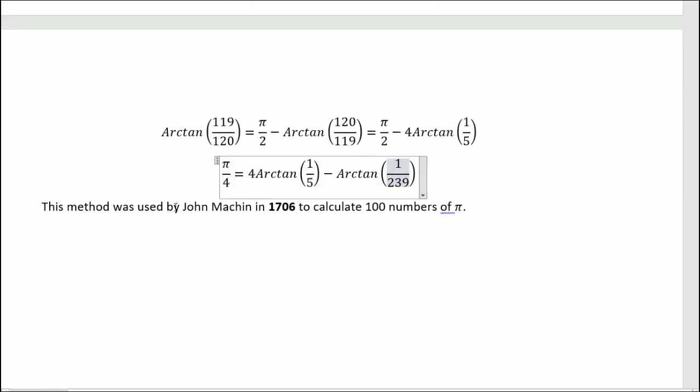And this method was used by John Machin, or I don't know how to say his name, I'm sorry, in 1706 to calculate 100 numbers of the numerical values of pi. So basically, he calculated this to get the value of pi. And it was fairly useful. And it's a really good approximation. Well, 100 numbers is really a lot. And this was very useful in the history to find the values of pi.